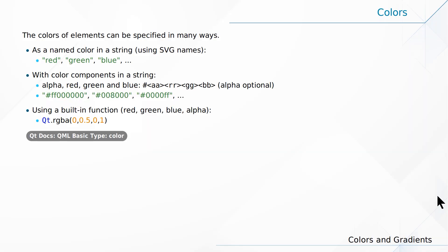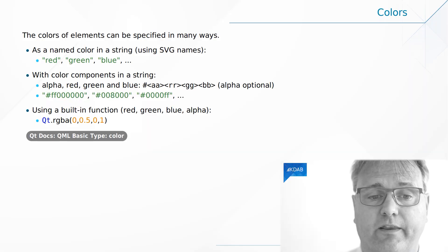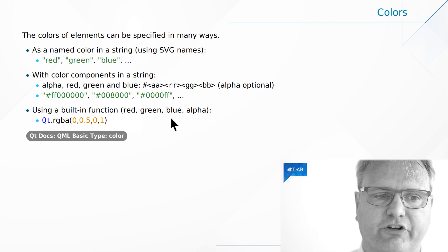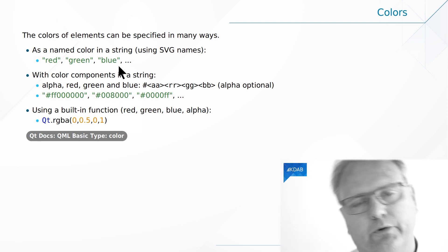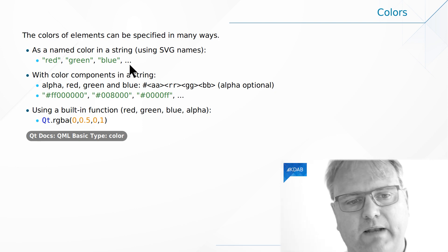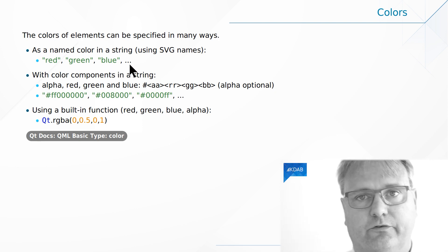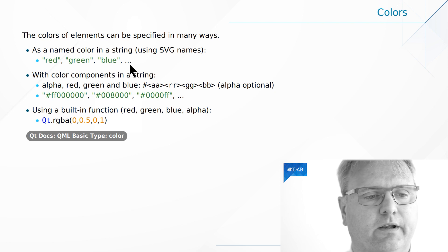Colors can be specified in three different ways in QML. You can specify them using the SVG names — so red, green, blue, cyan, black, white, transparent.